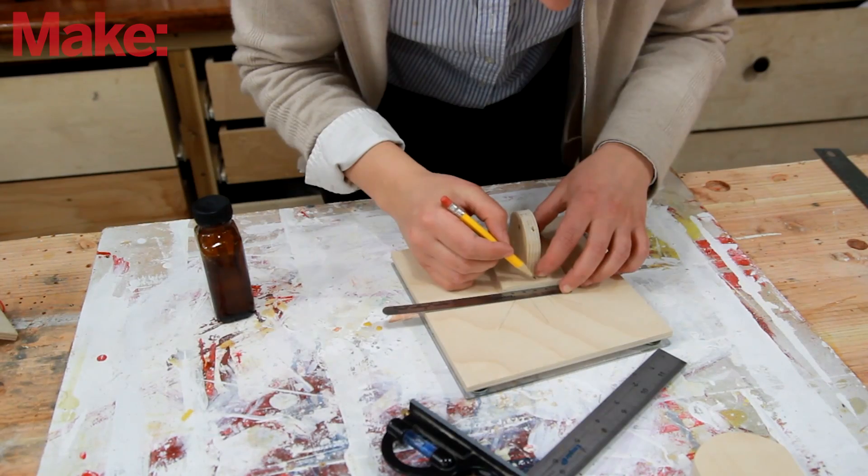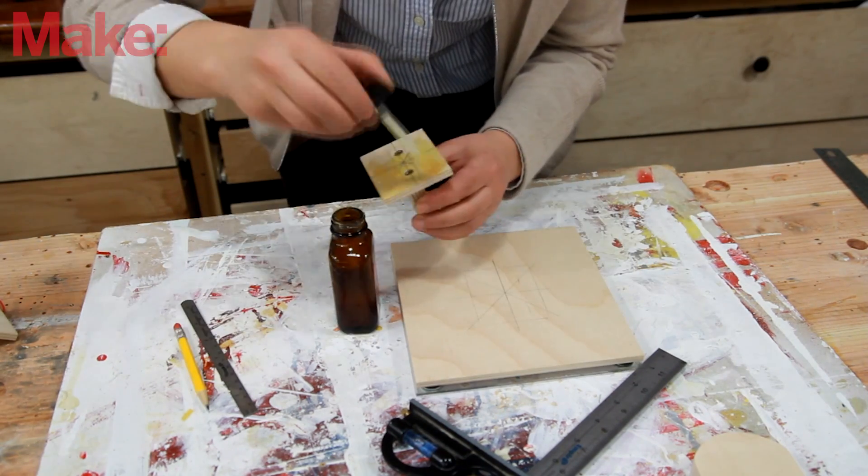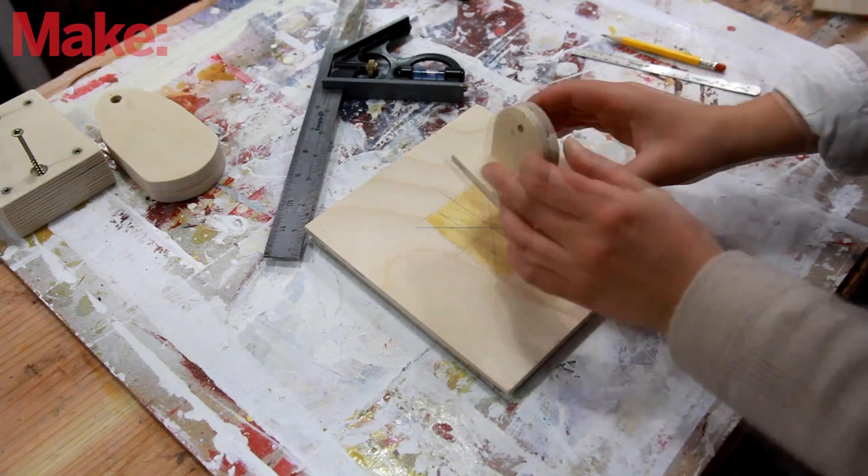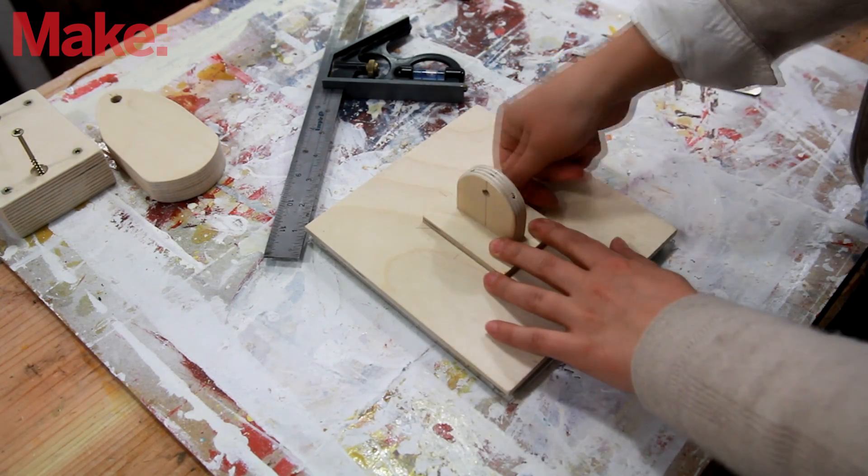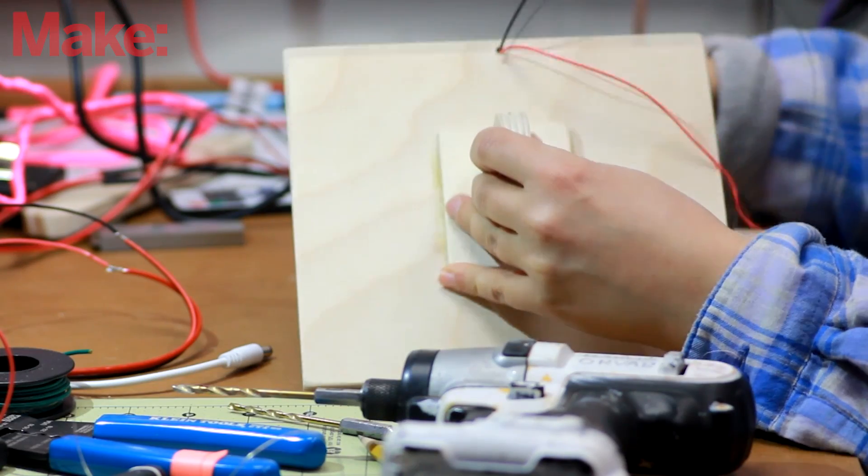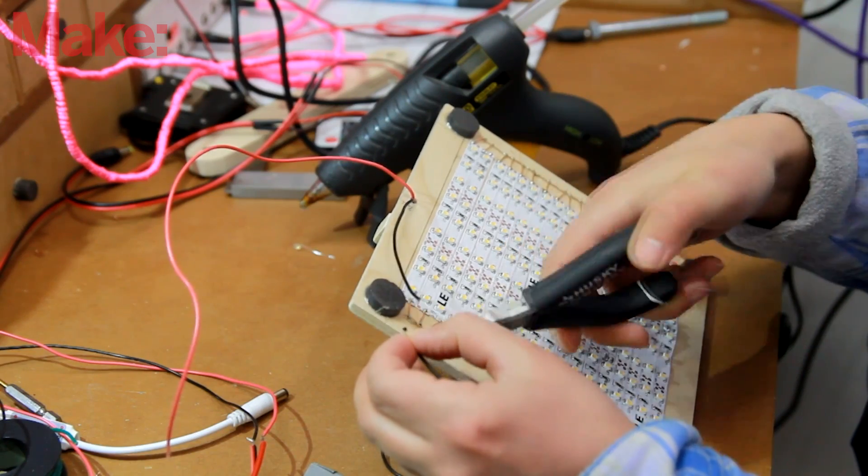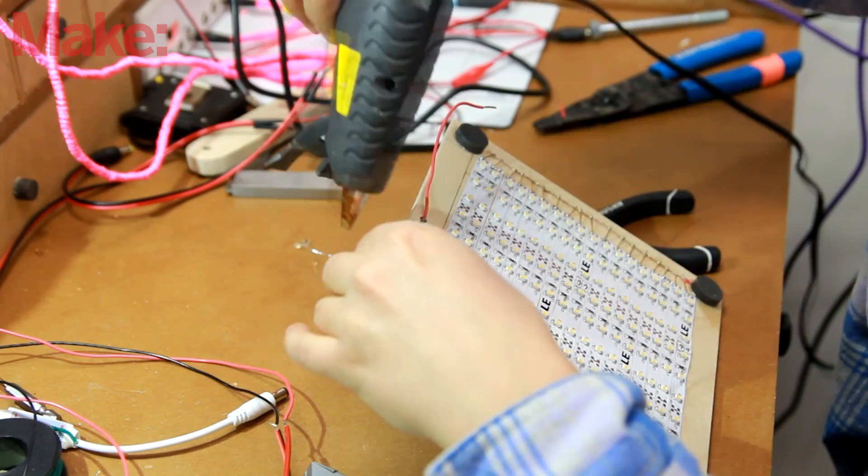Now I'm gluing on the connecting section to the light panel with some contact cement, just finding the center here. Now let's connect the wiring. Drilling a hole through the panel and feeding the wires connected to the magnet block through. Then soldering the negative wire to the negative side and the positive to the positive side.